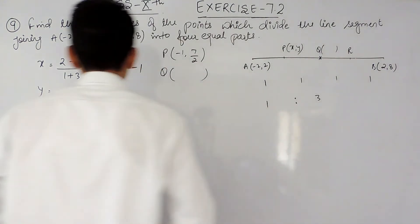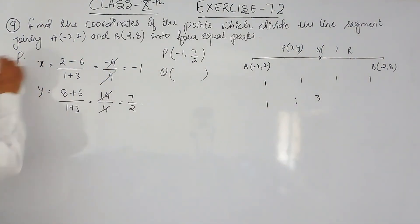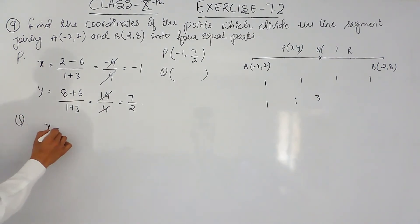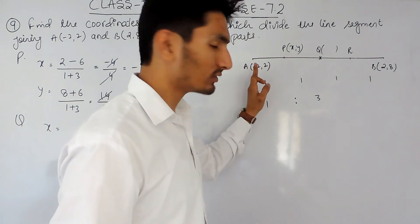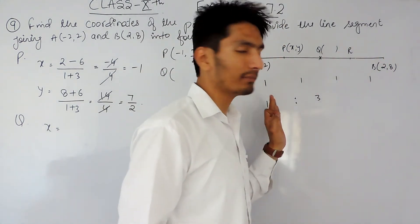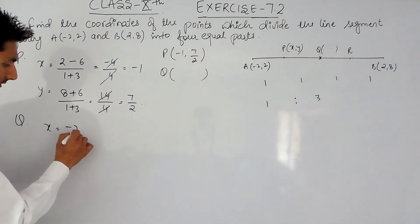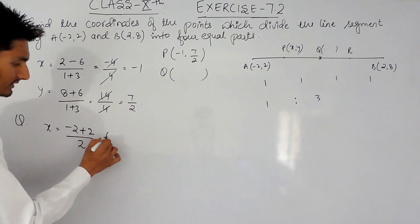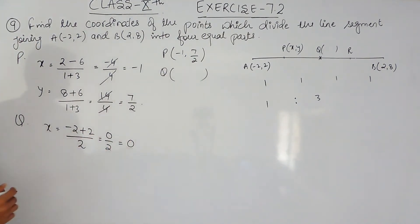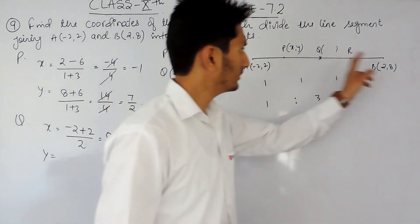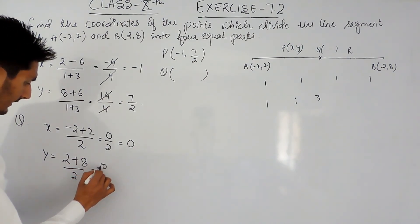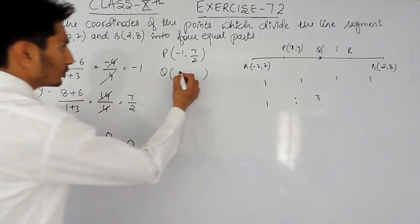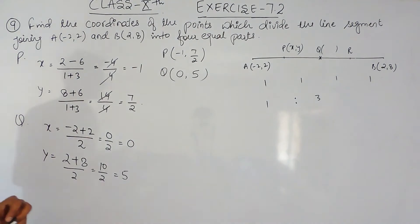Now I have to find the coordinate for Q using the midpoint formula. To find the x coordinate, I add the two x values and divide by 2, giving 0 upon 2, which is 0. For the y coordinate, I add the y values and divide by 2, giving 10 upon 2, which is 5. So the coordinates of Q are (0, 5).